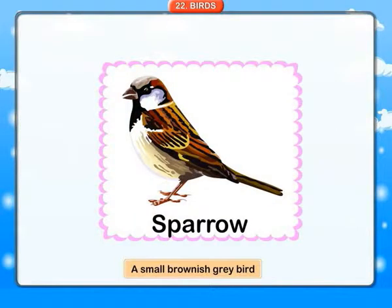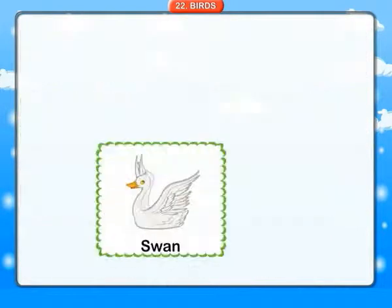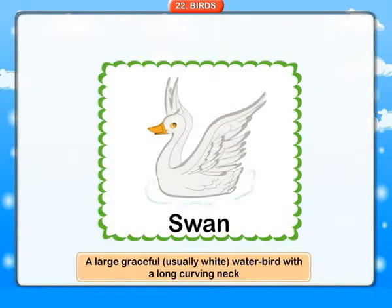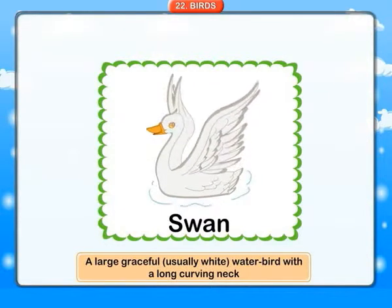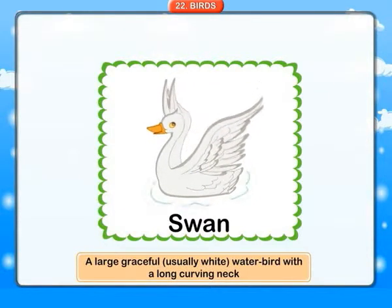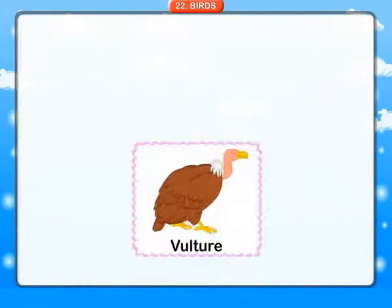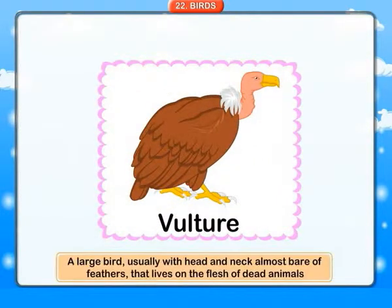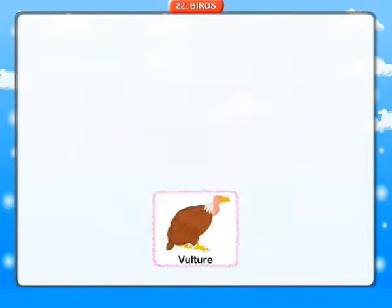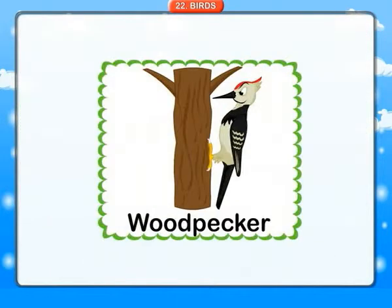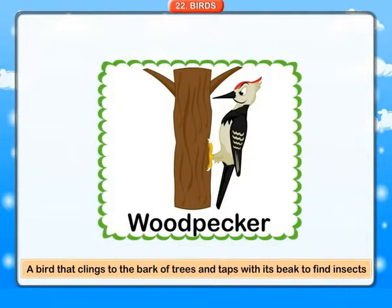Sparrow: a small brownish-grey bird. Swan: a large graceful, usually white, water bird with a long curving neck. Vulture: a large bird usually with head and neck almost bare of feathers, that lives on the flesh of dead animals. Woodpecker: a bird that clings to the bark of trees and taps with its beak to find insects.